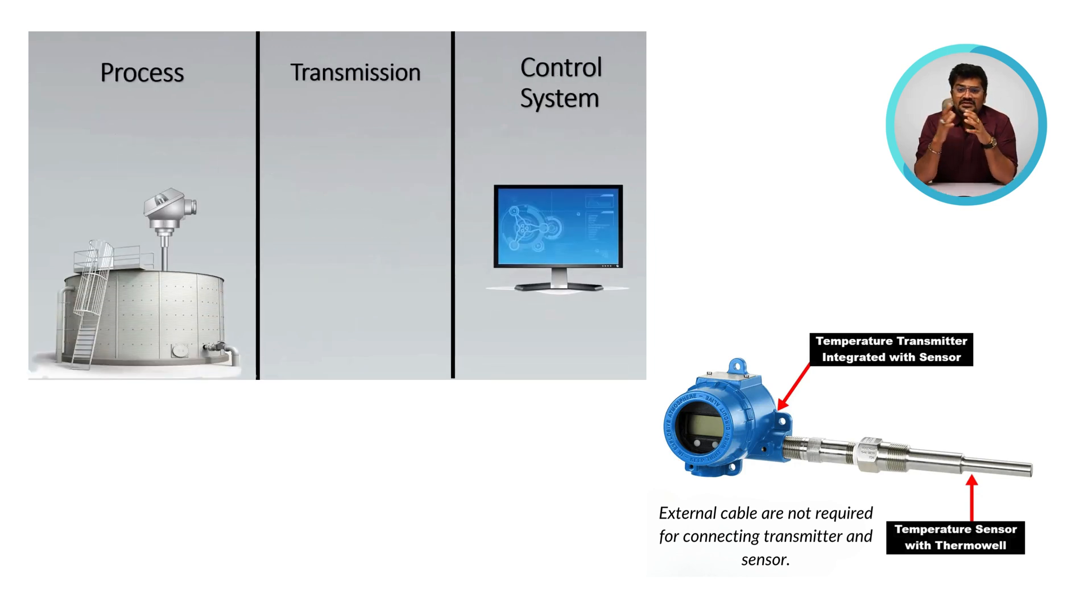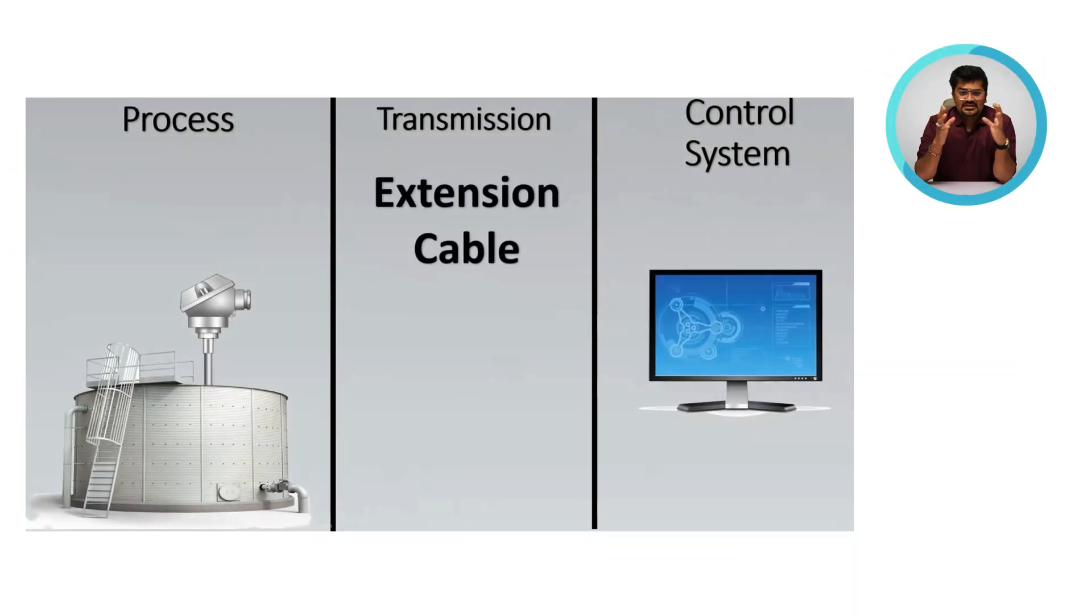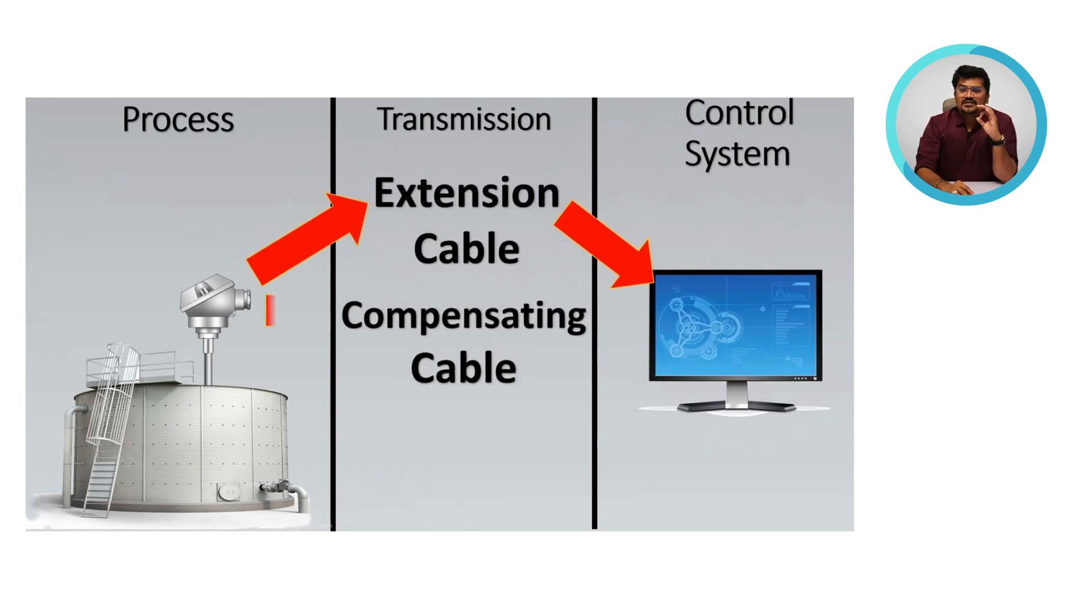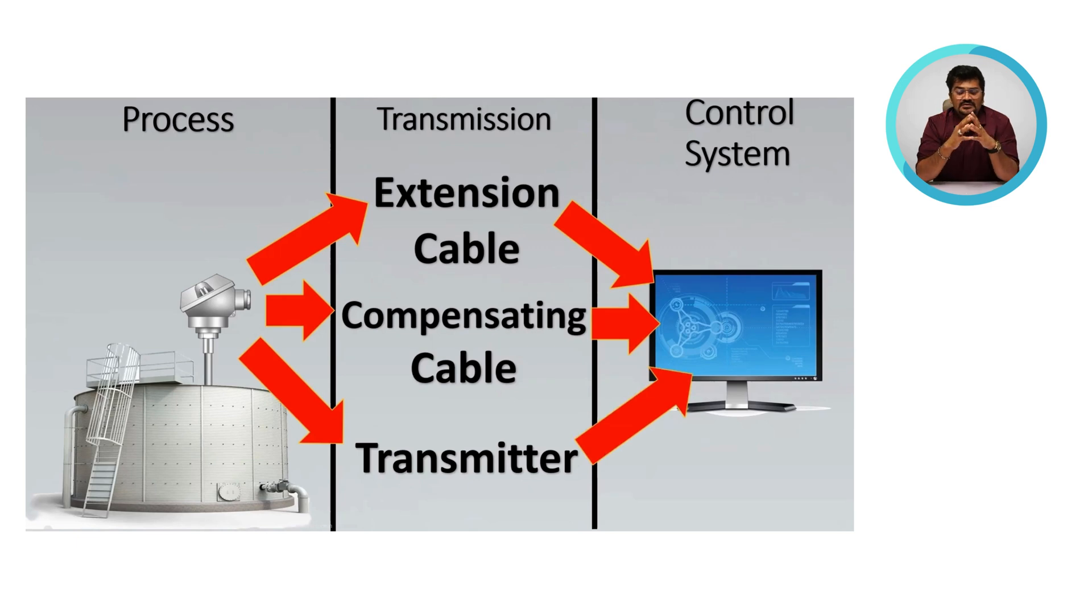The millivolt signal reaches the control panel by three methods. First is via extension cable, so the thermocouple can come through extension cable to the control panel. Second is through a compensating cable. And third is via transmitter. We will explore all of these methods one by one.